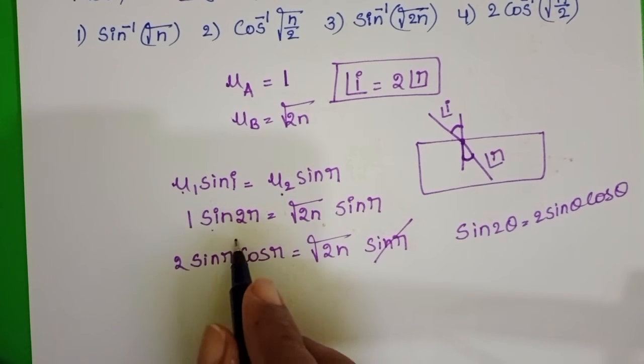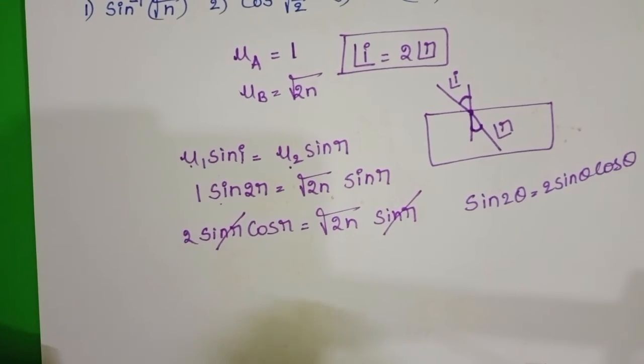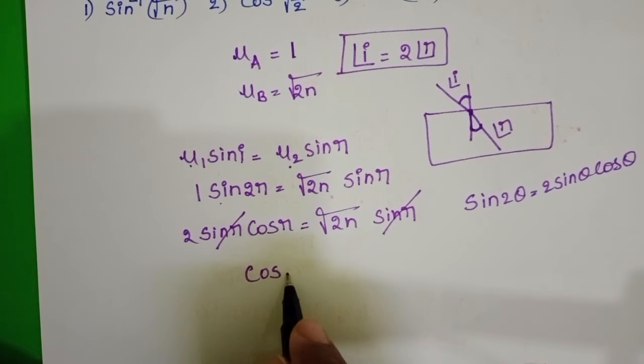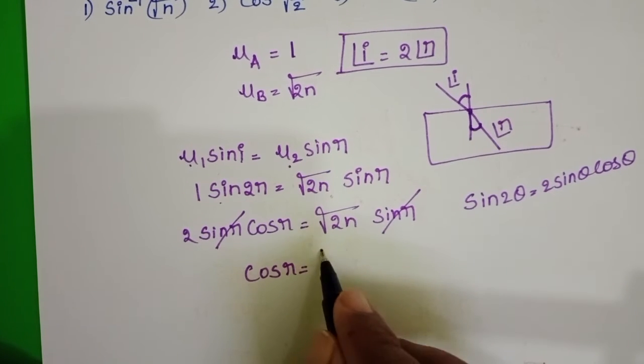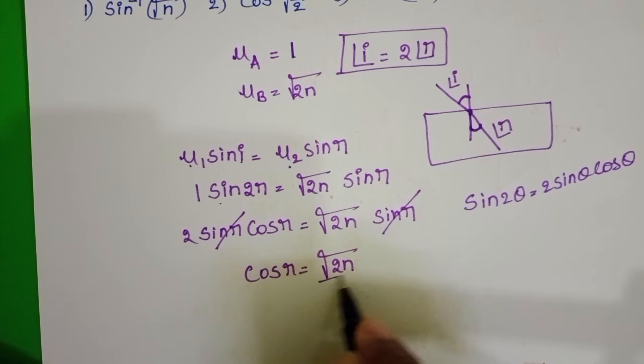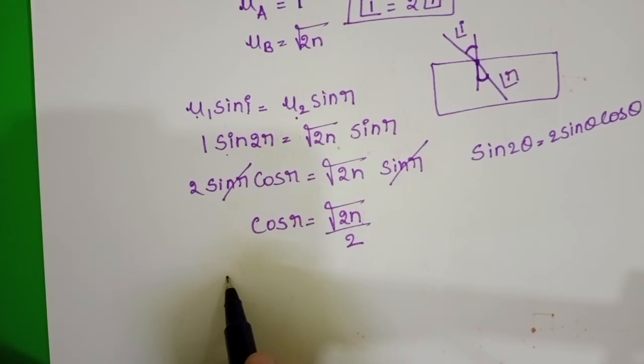On both sides sin r gets cancelled. Cos r = √(2n) / 2.